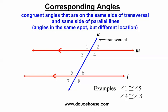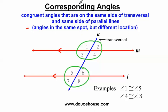Now we have corresponding angles. Corresponding is a word you might not understand. Corresponding angles - the definition I have students write down - are congruent angles that are on the same side of the transversal and same side of the parallel lines. Another way to look at this: corresponding means basically the same spot but a different location. If you look at this intersection like an intersection in your neighborhood, with street M and street L running parallel and street A crossing them, which angle corresponds to angle one down at the other intersection? That would be angle five - they're both in the top left corner.